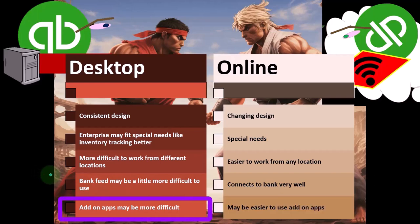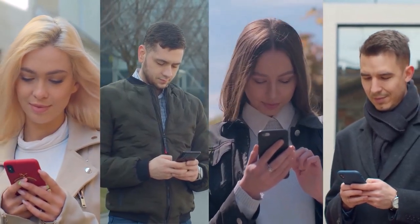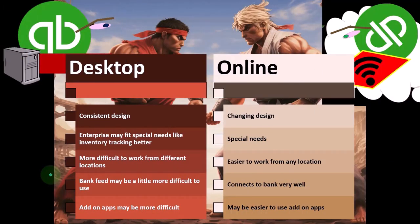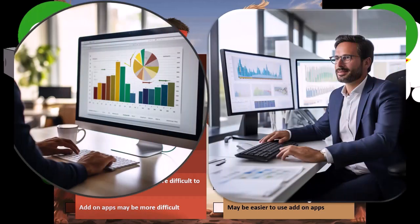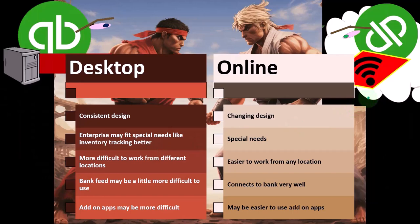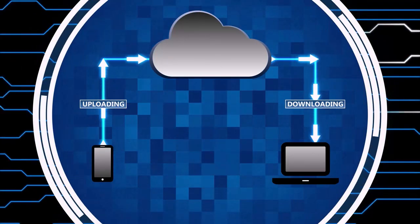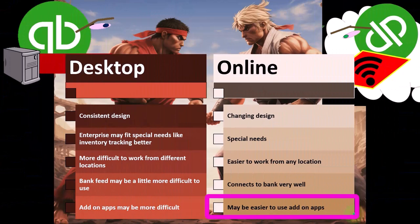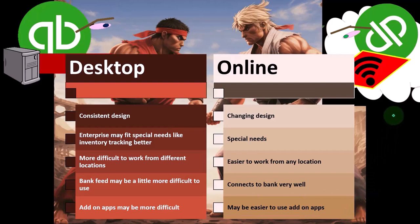Add-on apps may be more difficult to use on the desktop versus the online version. With the desktop, you might have access to add-on apps that give you special features within QuickBooks, but because it's desktop software, it might not be as easy to integrate certain types of apps. With the online version, it's easier to set up integrations with add-on apps. You do want to be careful about what add-on apps you use, as there could be pros and cons. But in general, if you're looking at integrations with other apps, it might be easier on the online version.